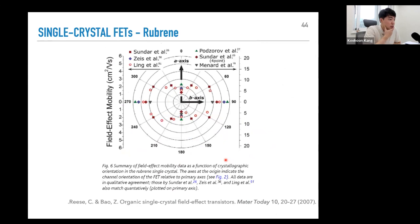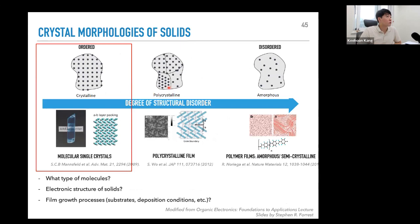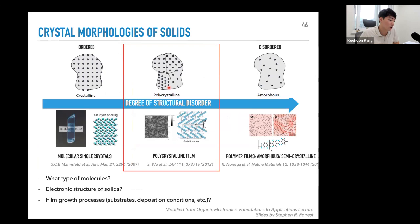Growth modes of organic thin films: depending on whether the atom-to-substrate or atom-to-atom interaction is dominant, you get either Frank-van der Merwe growth (smooth layer-by-layer, wetting the surface) or Volmer-Weber growth (3D island formation). Realistically, you often get something in between. For pentacene, the first layer completely wets the surface, but from the second layer on, molecular interactions become bigger and islands form.